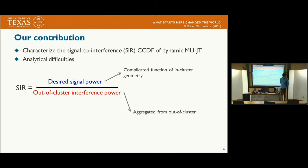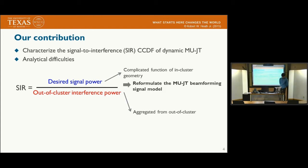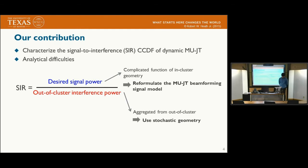However, there are several analytical difficulties in characterizing the SIR. The SIR consists of a complicated function of in-cluster geometry. We resolve this difficulty by reformulating the multi-user transmission beamforming signal model. Also, the out-of-cluster interference is hard to calculate as the whole aggregated interference coming from outside the clusters, so to resolve this difficulty we adopt the stochastic geometry model.